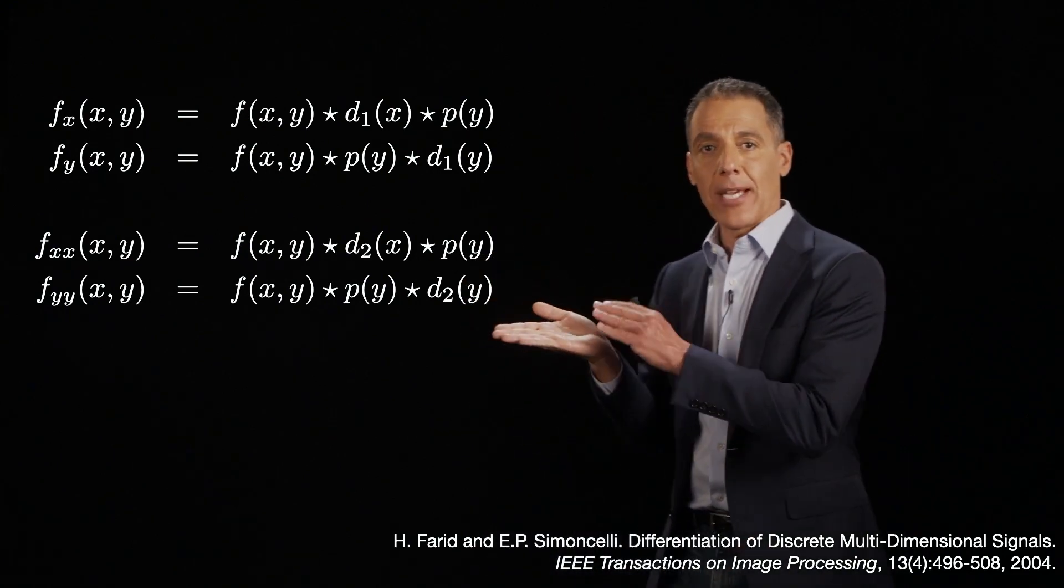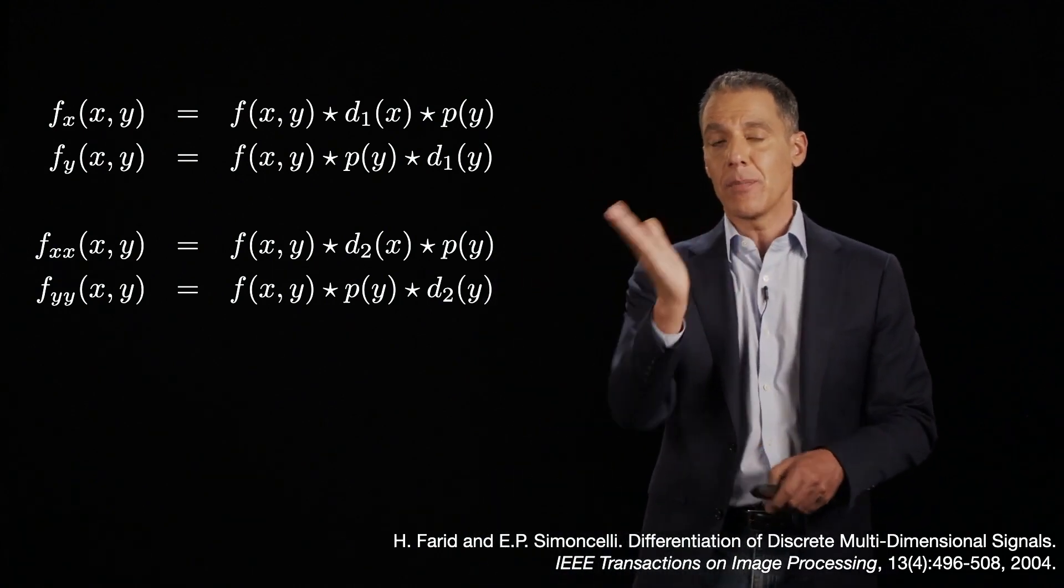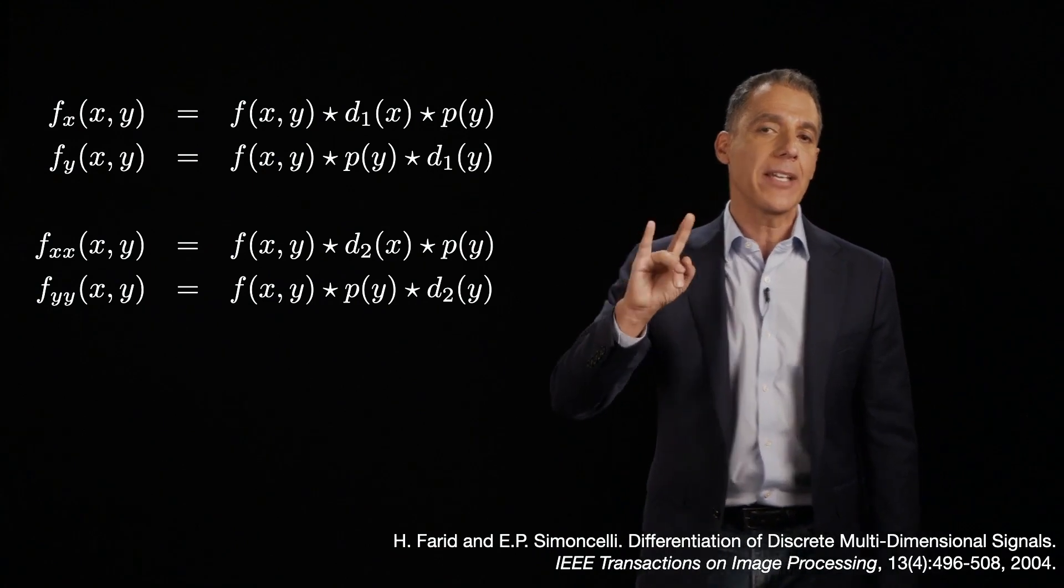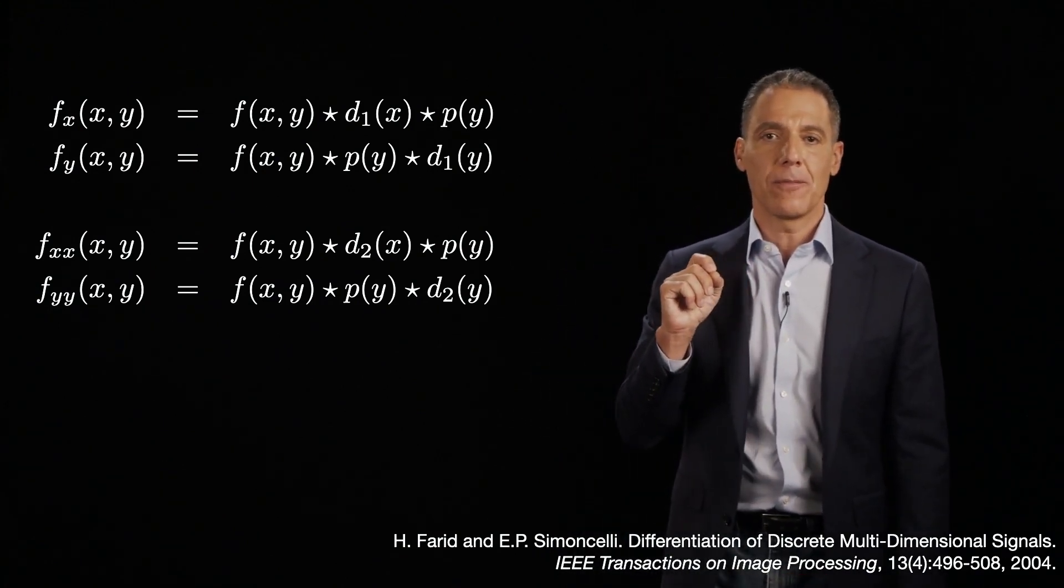I need to determine what happens as epsilon approaches zero, and I need to respect the linear algebraic properties of derivatives that when I compute the x derivative, and when I compute the y derivative, I compute any derivative in between by taking the linear combination. And those finite differences are crude and not very good approximations.